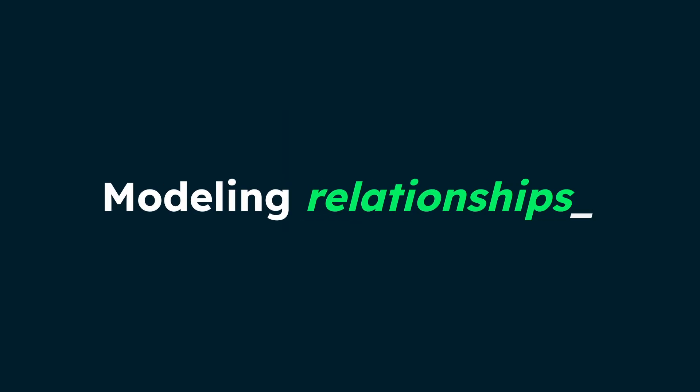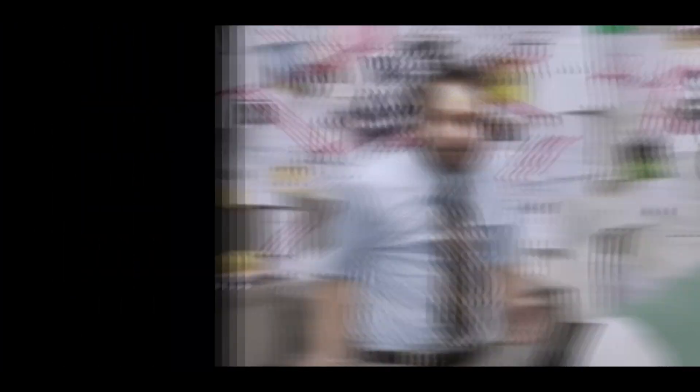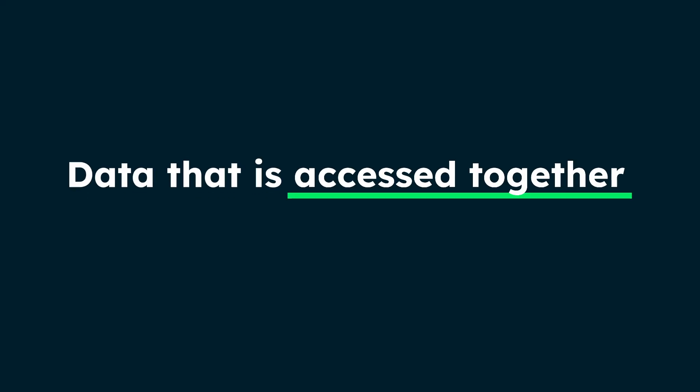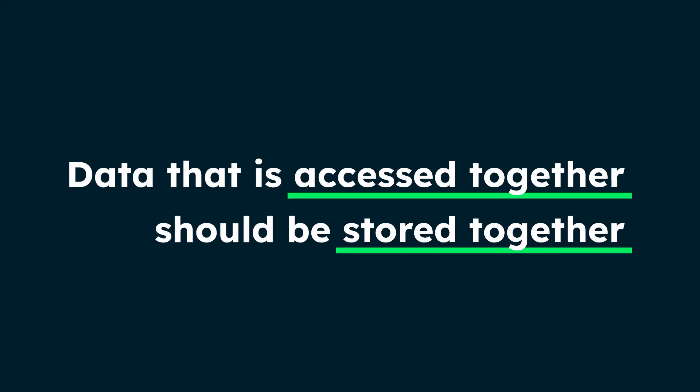What about modeling relationships? Many developers don't even know that you can store relationships in MongoDB, even complex ones. MongoDB follows a simple principle: data that is accessed together should be stored together. This approach leads to significant performance benefits by reducing the need for joins between collections. When using Prisma ORM with MongoDB, you have two main options for modeling relationships.